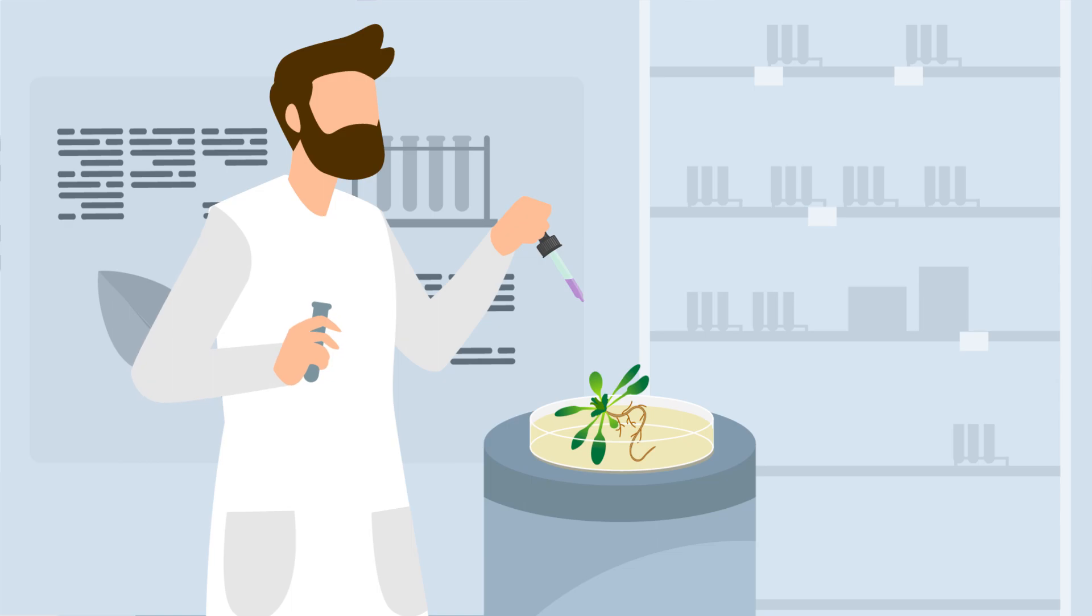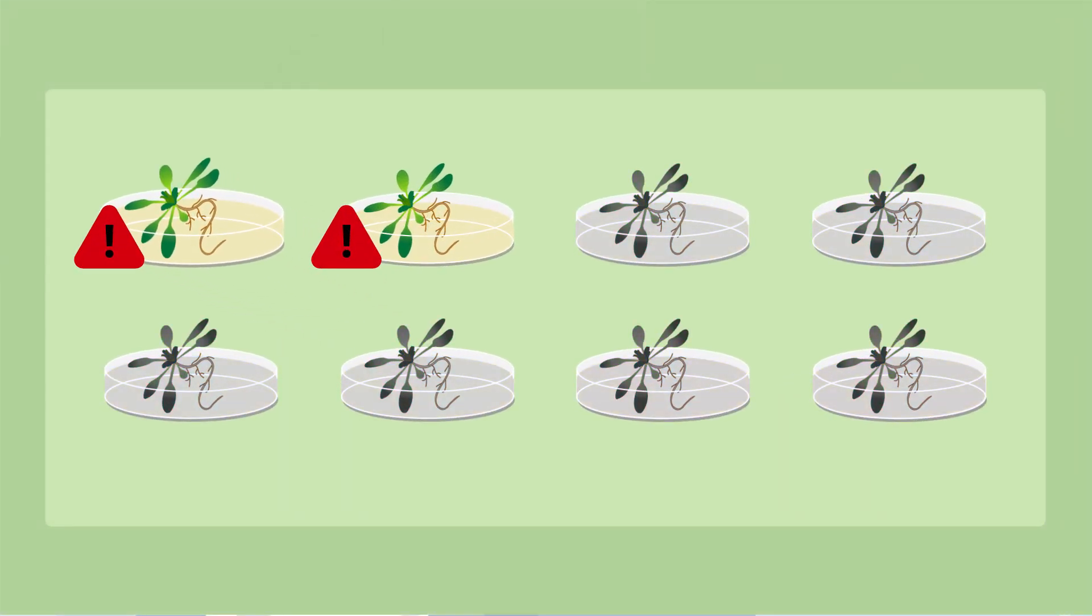The scientists further tested those eight strains by applying them to the root tips of seedlings from the Arabidopsis genus and observed that two of the eight strains induced whole plant resistance to the pathogens.